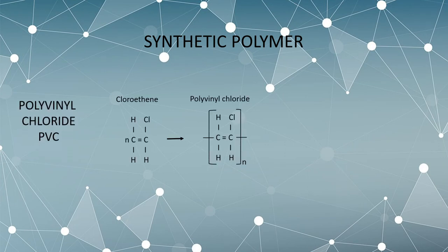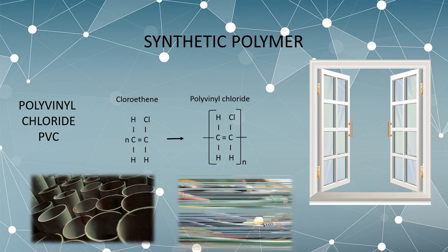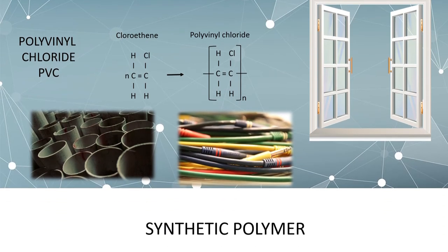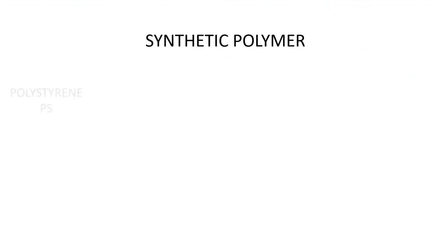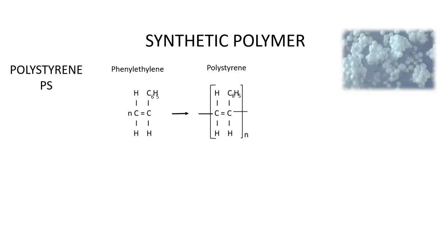Polyvinyl chloride, better known as PVC, is made up of chloroethene monomers. Window panes, water pipes, and electric cable insulators are common things made from PVC. You may have come across polystyrene material while being at a party.